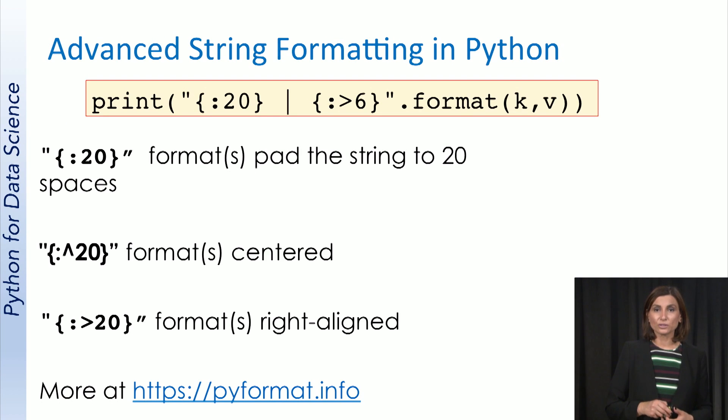In the notebook, we will use advanced string formatting operations in Python, so let's review them before we use them. In any string printing, if we format it with colon 20, it will pad the string to be 20 characters with spaces in the end.